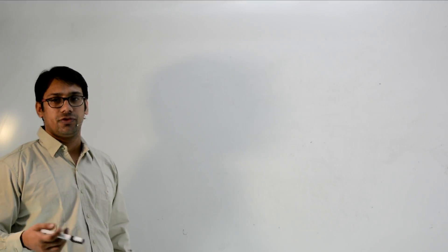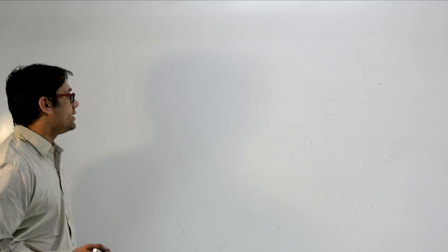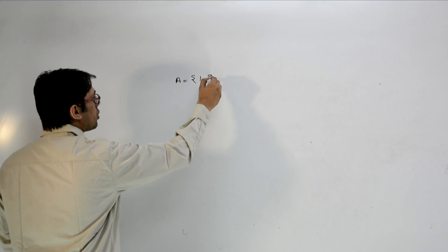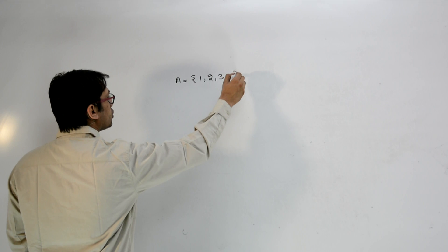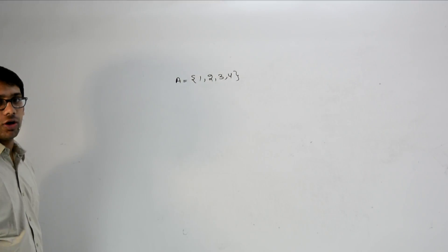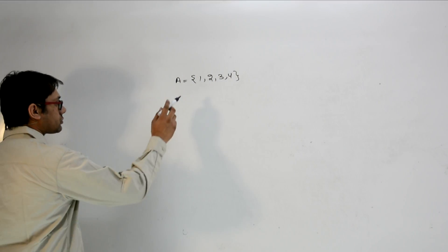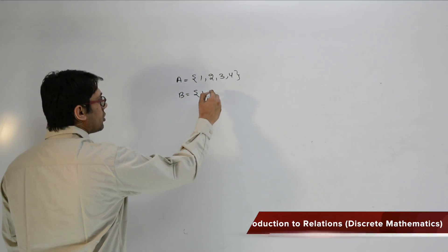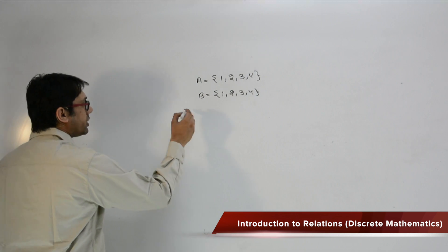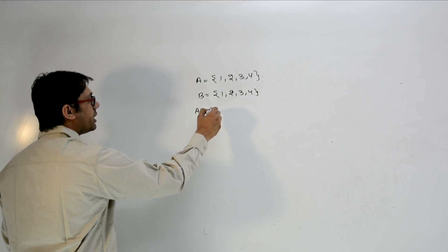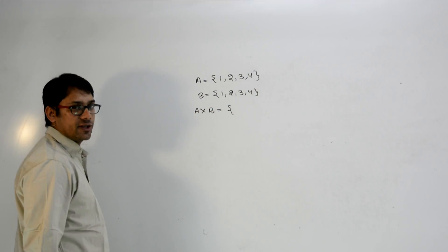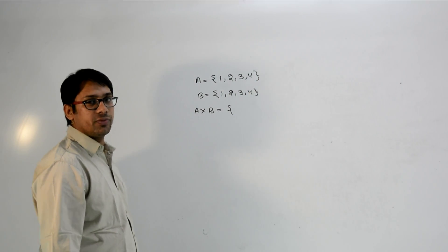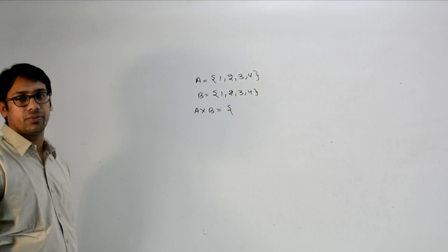Now let us look at a few examples of a relation. Assume we have a set A which contains 1, 2, 3, 4, and a set B which also contains 1, 2, 3, 4. Now what is A×B? A×B is going to contain 4 into 4, that means 16 elements.